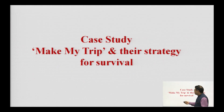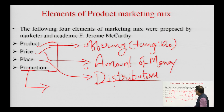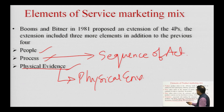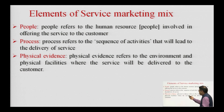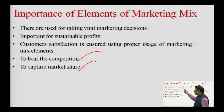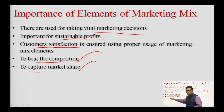Let us quickly recap what we learnt in this lecture. We talked about the elements of marketing mix, starting with the four P's for a product: product, price, place, and promotion, followed by definitions and examples. Then we shifted focus to the elements of service marketing mix — in addition to those four P's, there are three more P's: people, process, and physical evidence. Physical evidence is the environmental setting in which services are offered. The importance of marketing mix elements: they are used for taking vital marketing decisions, for profit sustainability, consumer satisfaction, to beat competition, and to capture market share.